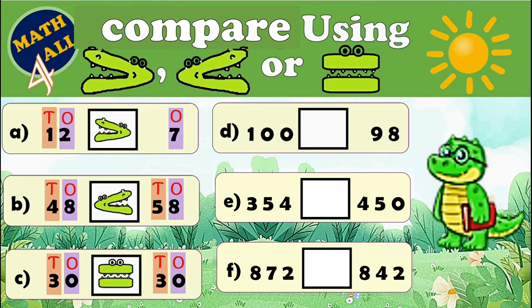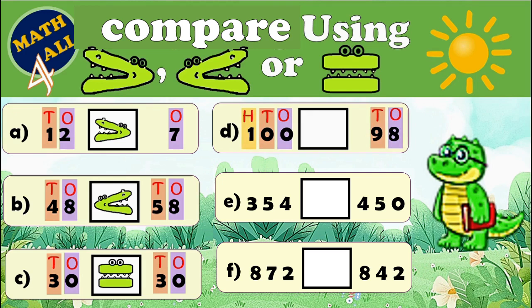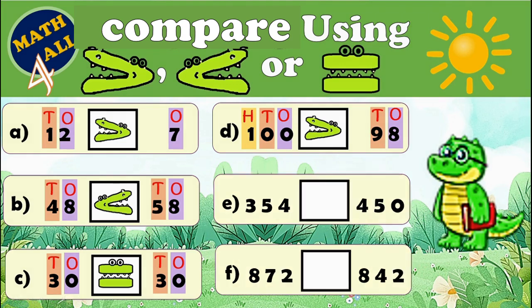Example D: now we have bigger numbers — it's more difficult! But Number Gator could answer this, because Number Gator is good at math. Here we have a three-digit number and a two-digit number. Which one is bigger — three digits or two digits? Yes, three digits is greater! So 100 is greater than 98, and Number Gator is going to eat number 100. Let's read: 100 is greater than 98.